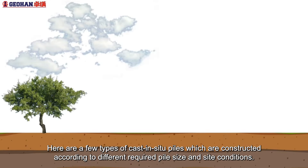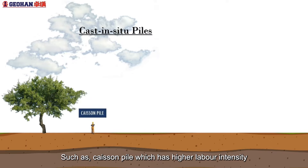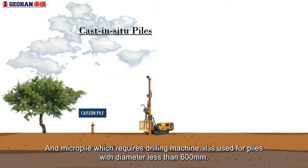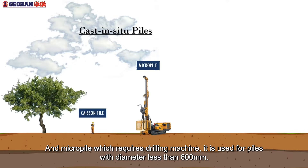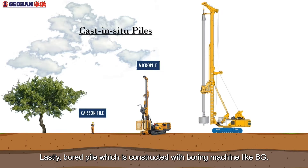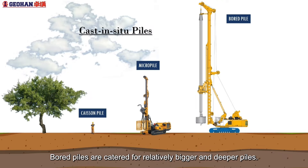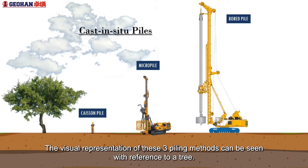Here are a few types of cast-in-situ piles which are constructed according to different required pile size and site conditions. Such as caisson pile, which has higher labour intensity. Hand-dug caisson piles are recommended for sites which could not sustain large machines such as the boring machine. And micro pile, which requires a drilling machine and is used for piles with diameter less than 600 mm. Lastly, bored pile, which is constructed with a boring machine like BG. Bored piles are catered for relatively bigger and deeper piles. The visual representation of these three piling methods can be seen with reference to a tree.